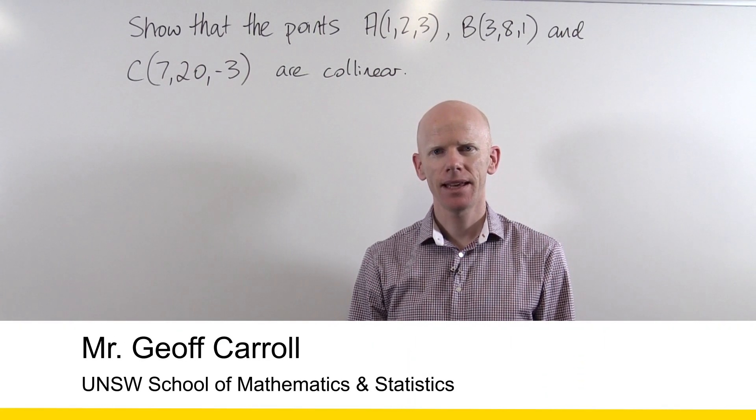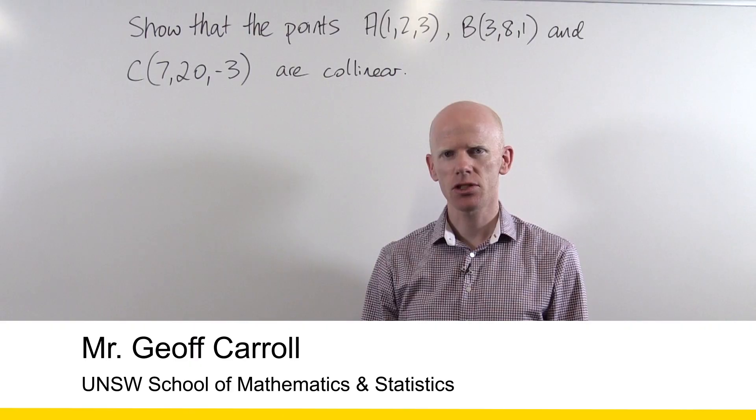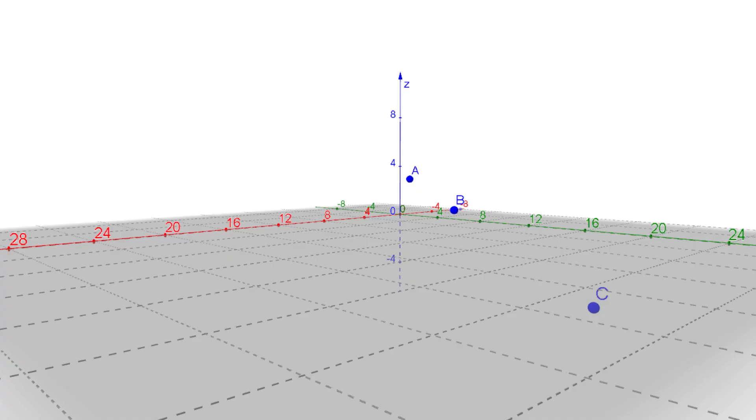Hello. Our task in this question is to show that three points A, B and C in three-dimensional space are collinear.